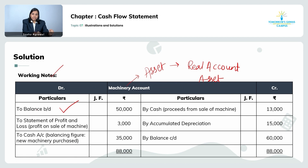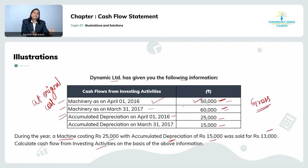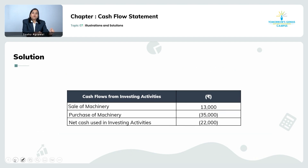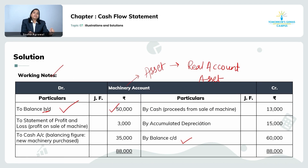On the debit side, we write 'to balance brought down: 50,000.' We are also given the closing balance, so we write it on the credit side as 'by balance carried down: 60,000,' since the closing balance is the amount at the end of the financial year.